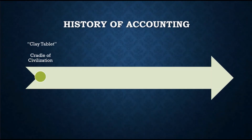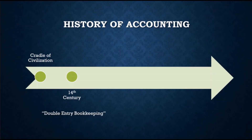The most important event in accounting history is generally considered to be the dissemination of double-entry bookkeeping by Luca Pacioli, who is considered the father of accounting. Luca Pacioli wrote 'Summa de Arithmetica Geometria Proportioni et Proportionalita,' or 'Everything About Arithmetic, Geometry, Proportions, and Proportionality,' which is the first book published that contained a detailed chapter on double-entry bookkeeping.